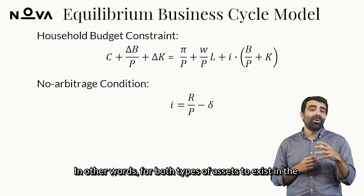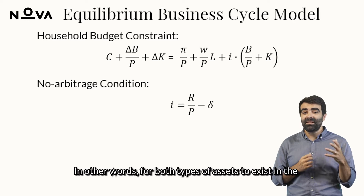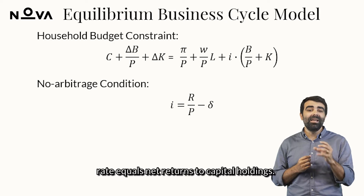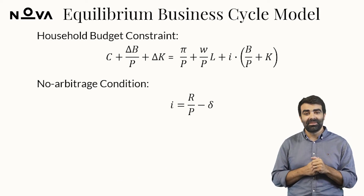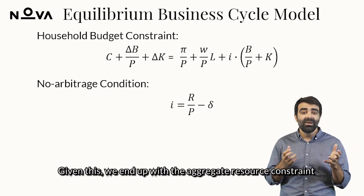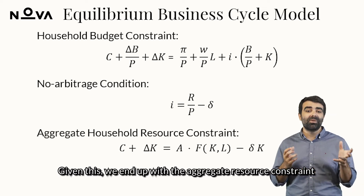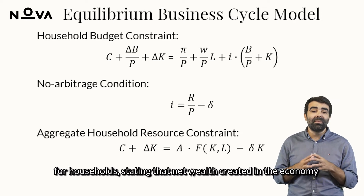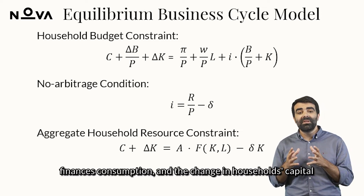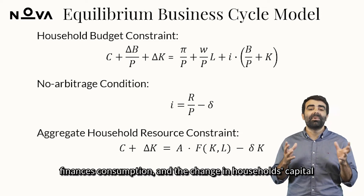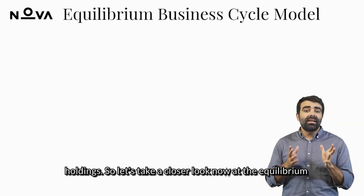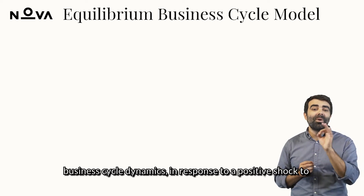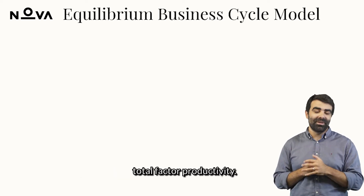In other words, for both types of assets to exist in the economy, they must pay the same return, and hence the interest rate equals net returns to capital holdings. Given this, we end up with the aggregate resource constraint for households, stating that net wealth in the economy finances consumption and the change in household's capital holdings. Let's now take a closer look at the equilibrium business cycle dynamics in response to a positive shock to total factor productivity.